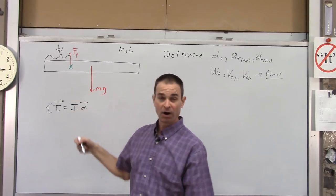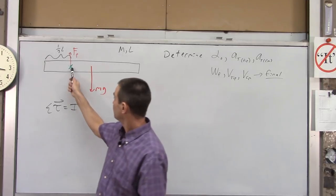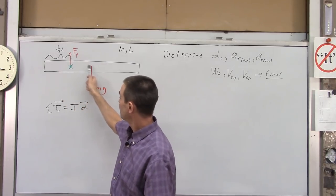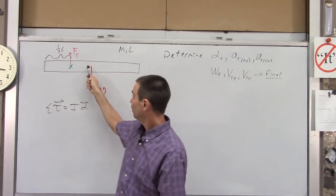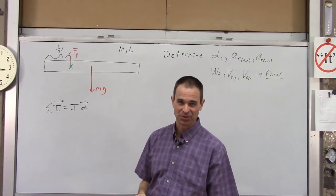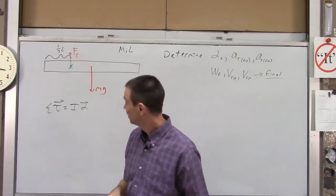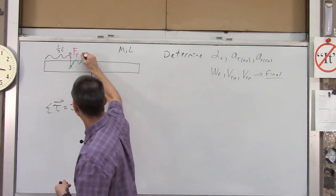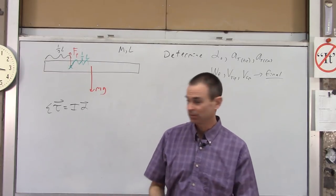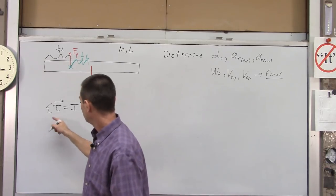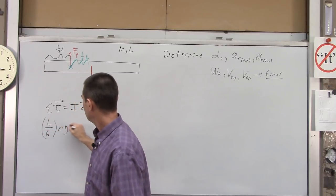Torque is R cross F. What's R? If the pivot is at one-third L from the end, and the center of mass is at half of L, then the distance from the pivot to the center of mass is one-half minus one-third, which is one-sixth. So this distance is L over 6 — that's your perpendicular lever arm. Net torque: R is L over 6, times mg, equals I alpha.